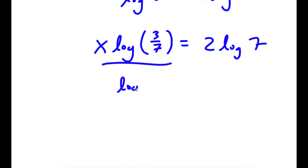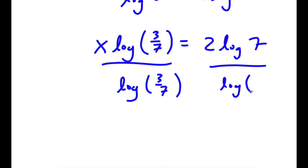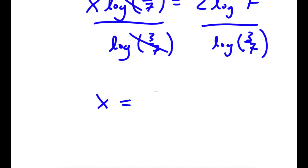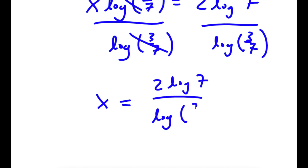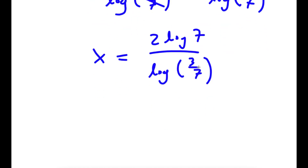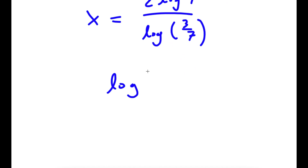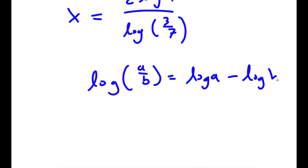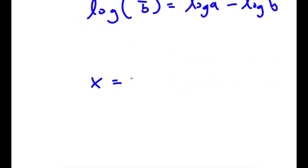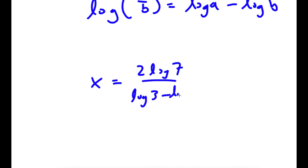Now if I divide both sides by log of 3 over 7, these two cancel out, and now I have x is equal to 2 log 7 over log(3/7). Now if I have something in the form log a over b, this is equal to log a minus log b. So log(3/7) equals log 3 minus log 7.